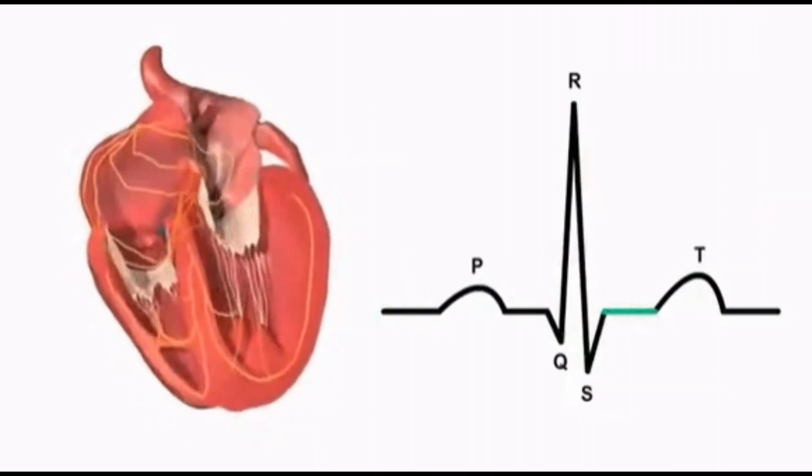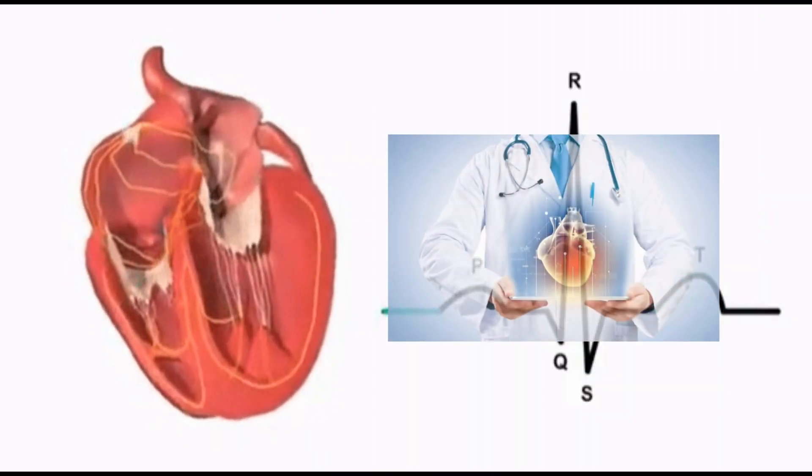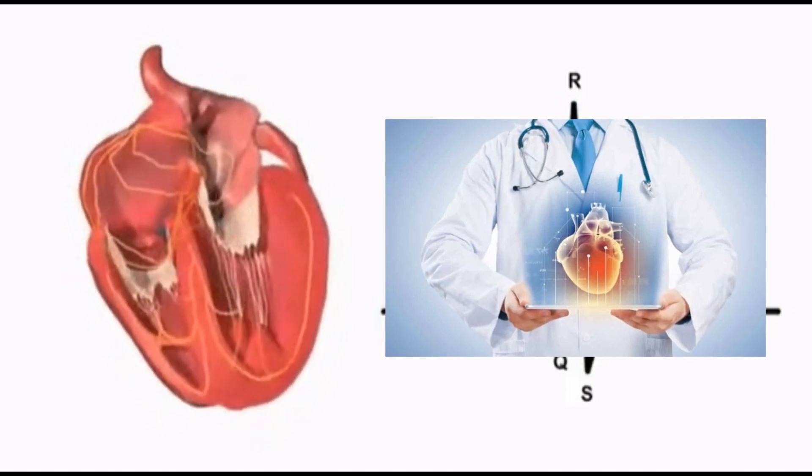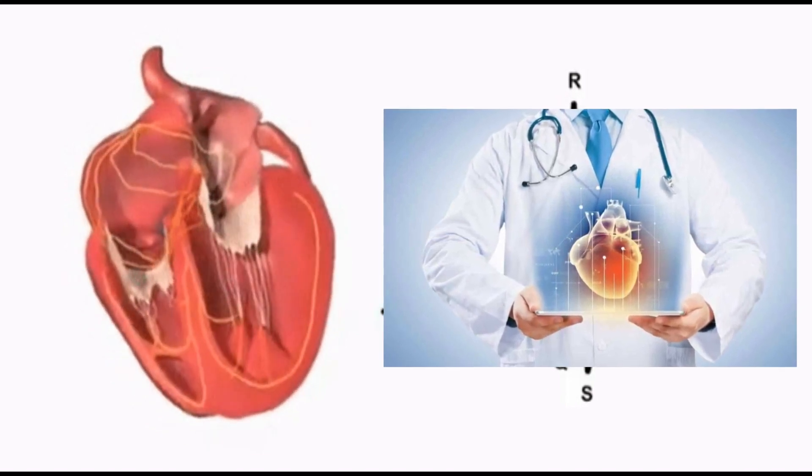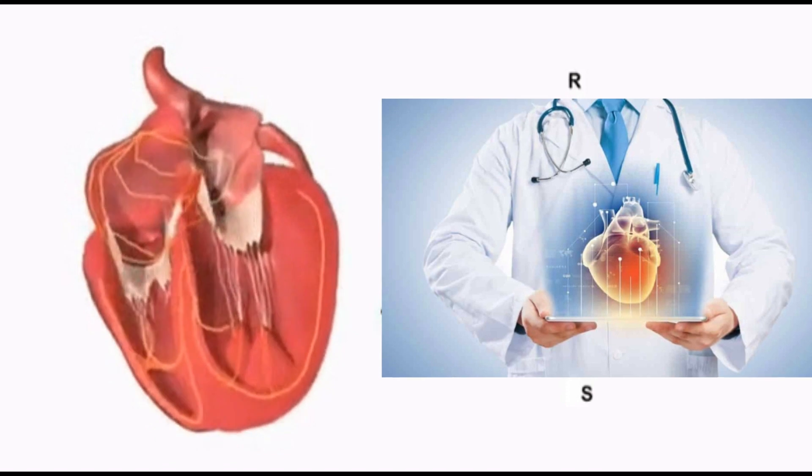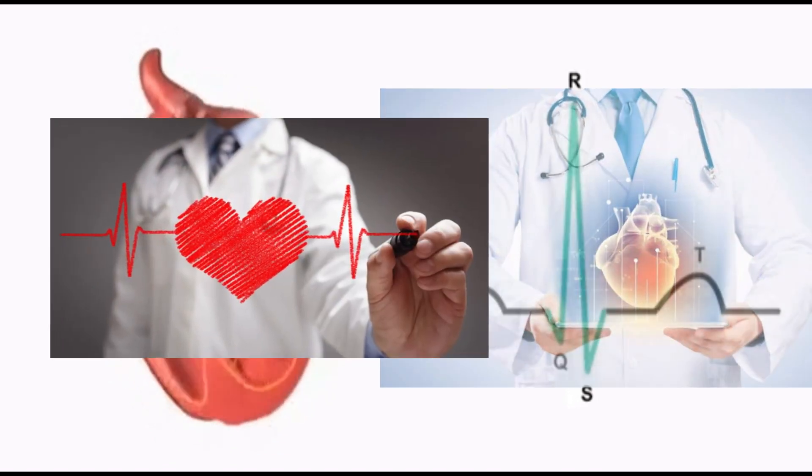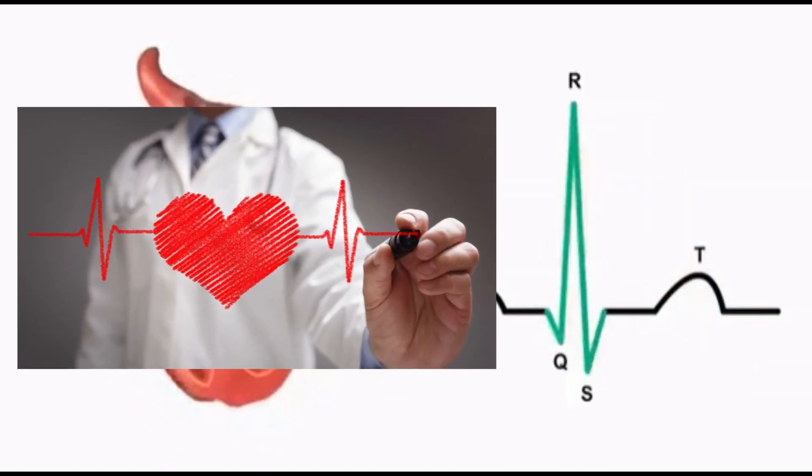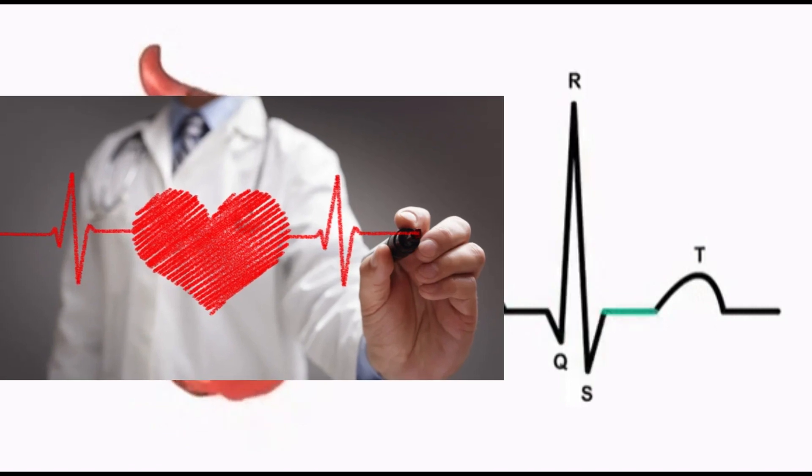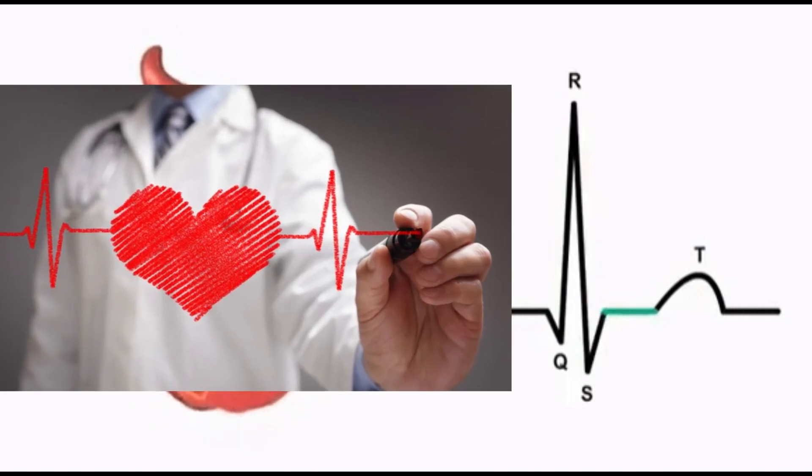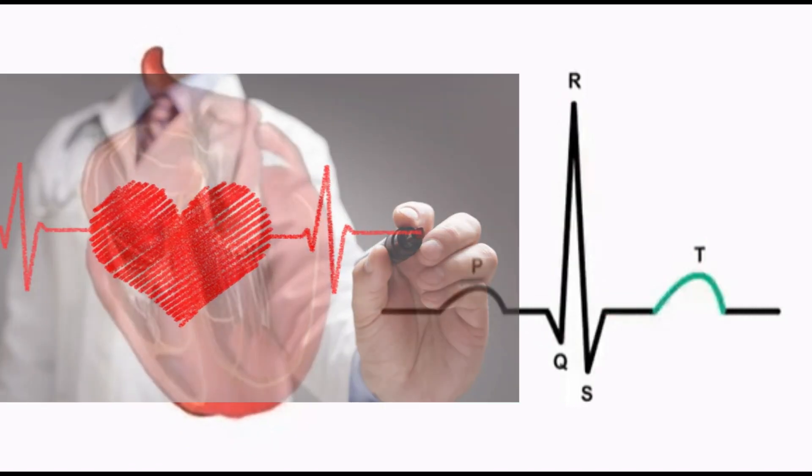In conclusion, understanding the QRS complex is essential for interpreting EKGs and diagnosing various heart conditions. By knowing the basic characteristics of the QRS complex and how to measure it accurately, you can gain important insights into the electrical activity of the heart and identify any abnormalities that may require further investigation.